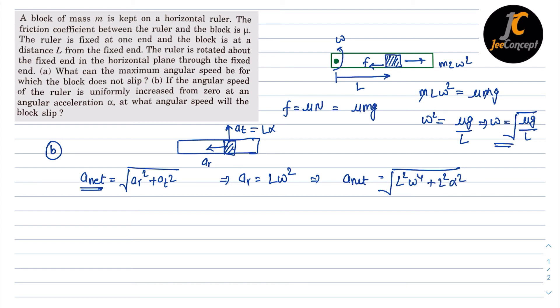Now the required friction will be m times a net and that should be equal to the maximum available friction, which is mu times m into g. So m will cancel out.